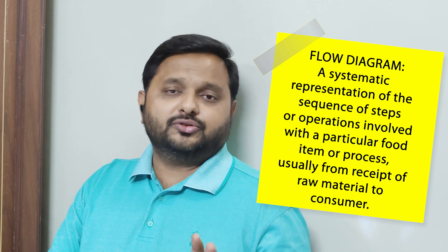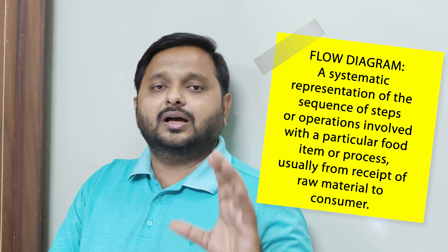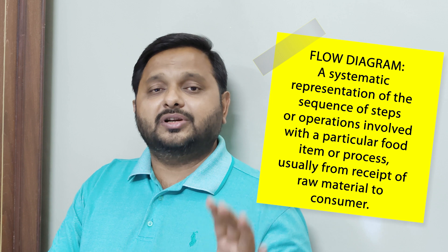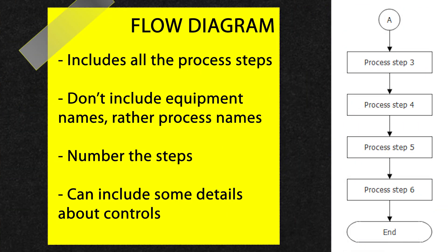So what are the key elements of a flow diagram? The HACCP team has the responsibility of making a proper, detailed flow diagram without any mistakes. The flow diagram needs to include all the steps of the process. It does not need to have the name of the equipment, but it needs to have the process steps. For example, we don't need to say 'chiller' or 'chiller number one' — we need to say 'chilling' or 'chilled storage' as a process step. All steps should be numbered in sequence.